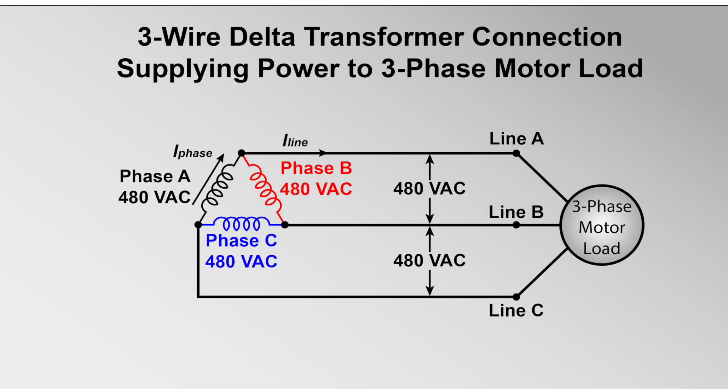Shown here is a typical three-phase, three-wire delta-connected transformer. The delta-connected transformer consists of three transformer windings connected end-to-end. For these transformers, phase voltage equals the line voltage and the line current is equal to phase current times 1.73.